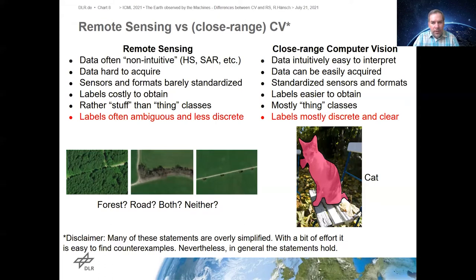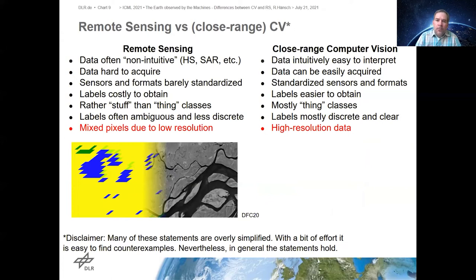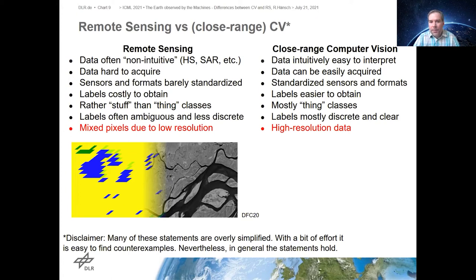Regarding resolution, in close-range computer vision we have high-resolution data — so much that one of the most common pre-processing steps is downscaling, because we don't need that resolution for our decisions. In remote sensing, especially for spaceborne sensors, resolution is usually lower than we'd like, and there is a lot of effort in upscaling images to higher resolution. The same is true for reference data: semantic maps and geophysical properties are often integrated over larger areas, resulting in very coarse resolution target variables.